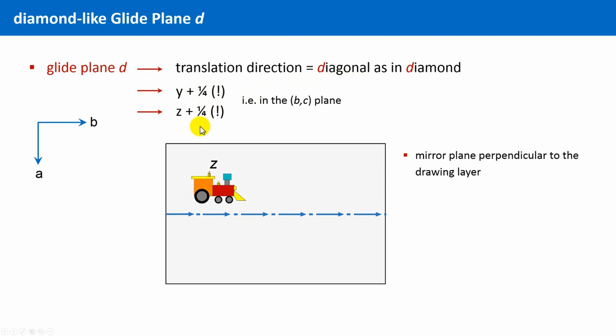So, here in this scenario, the glide plane is oriented perpendicular to the drawing layer. And we start with this locomotive located at a height z above the drawing layer. First, we have to reflect it at this plane, and then we move this locomotive, first by one quarter along the b or y direction, and then also by one quarter along the positive c or z direction, which is in total equivalent to a diagonal movement parallel to the b-c plane.